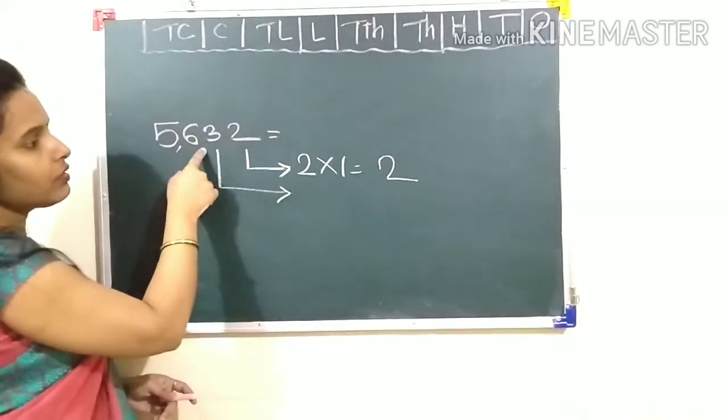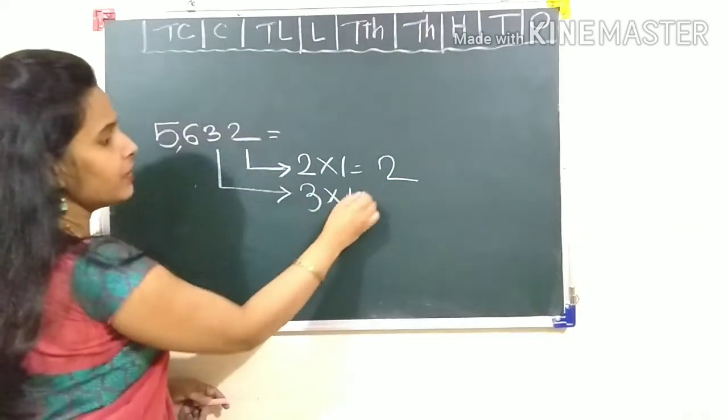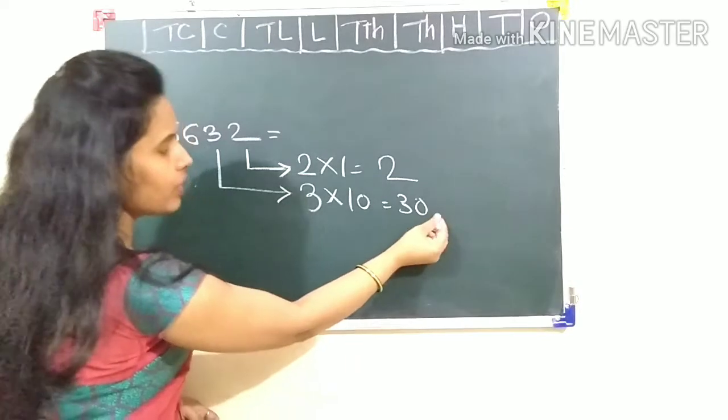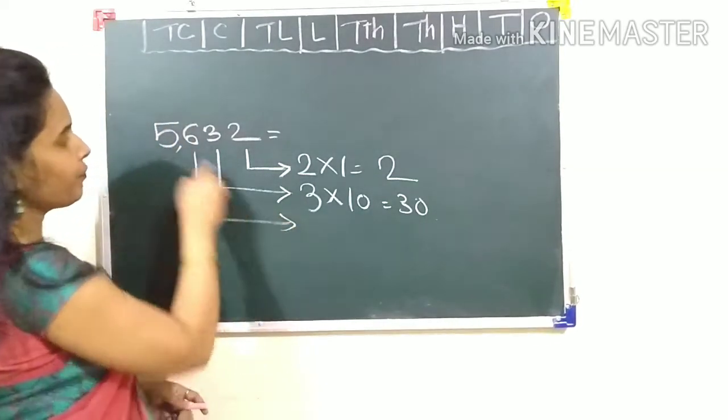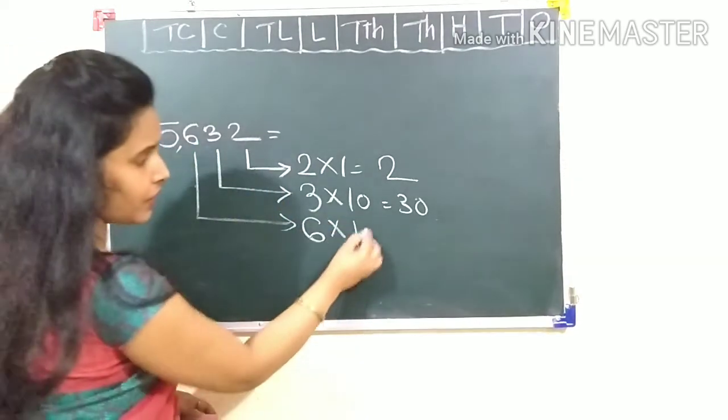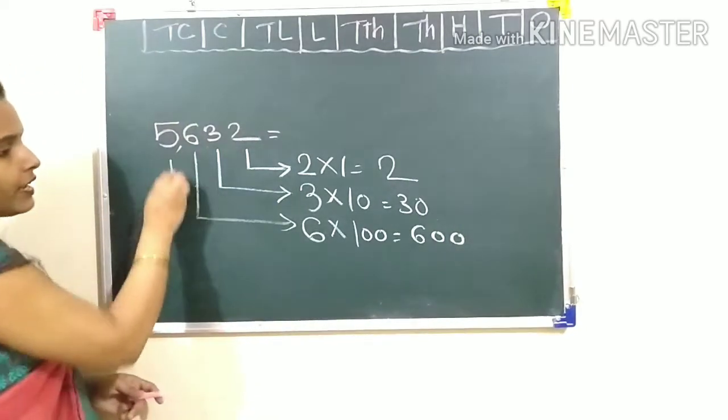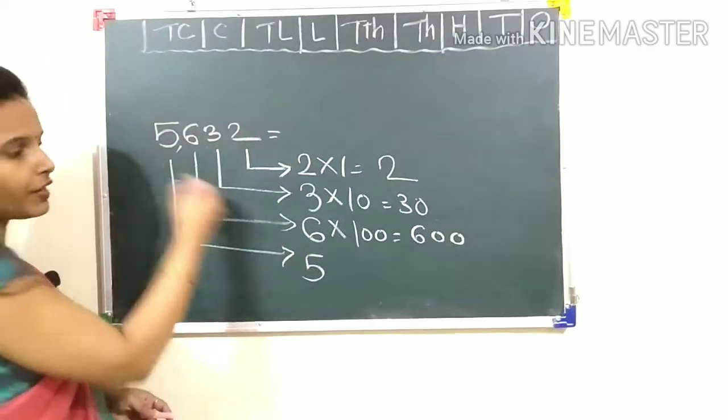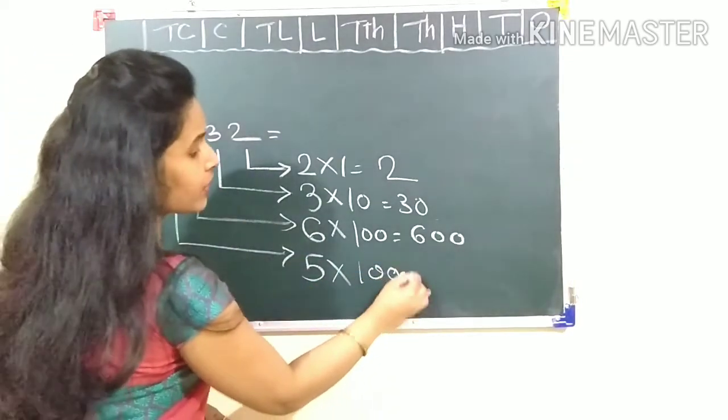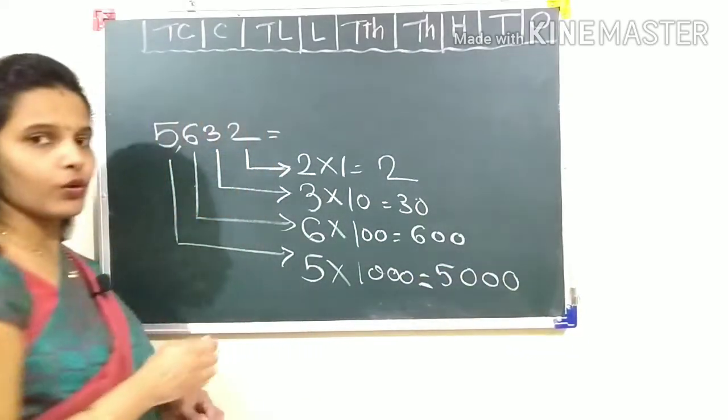Next is 3. 3 is the digit and this place is 10, so this place value is 30. Next is 6, and this place is 100, so it's 600. Next place value is 5, and the place name is 1000, so this is 5,000.